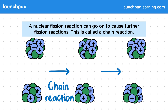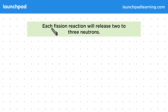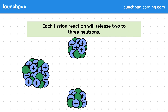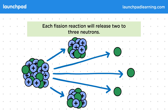But what is it that causes these chain reactions? Well, each fission reaction will release two to three neutrons. During a fission reaction, the larger nucleus splits into two smaller nuclei, as well as neutrons.